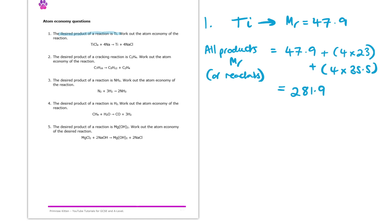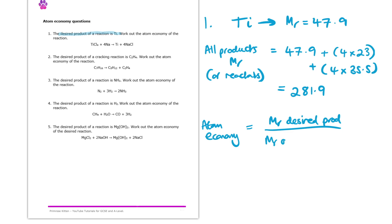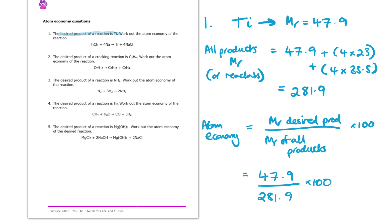That is the MR of all of the products. Reminding ourselves of the equation for Atom Economy: it's equal to the MR of your desired product divided by the MR of all of the products or reactants, then times by 100. Putting those numbers in, we get 47.9 divided by 281.9, times by 100. And what we end up getting for the answer, to one decimal place, is 17.0%.